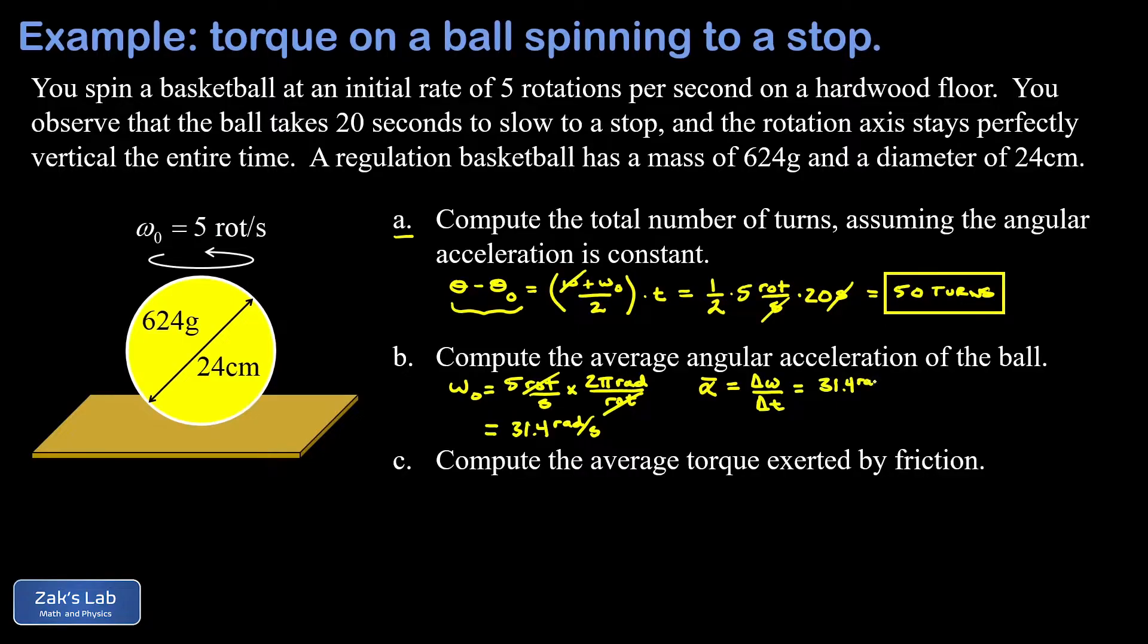As we go from our initial speed to our final speed of zero, this happened in a time of 20 seconds. Running the numbers real quick, we get 1.57 radians per second per second, or radians per second squared.